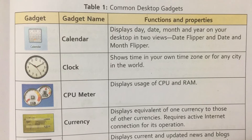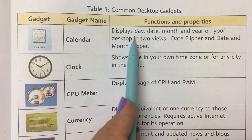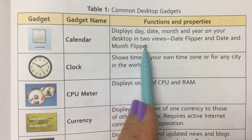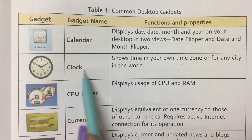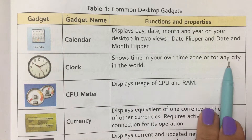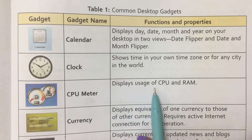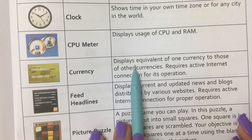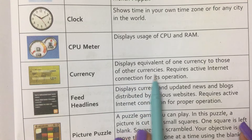Common desktop gadgets are: Calendar — displays day, date, month, and year on your desktop in two views: date flipper and date and month flipper. Clock — shows time in your own time zone or for any city in the world. CPU Meter — displays usage of CPU and RAM. Currency — displays equivalent of one currency to those of the other currencies.